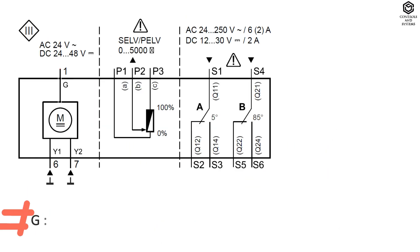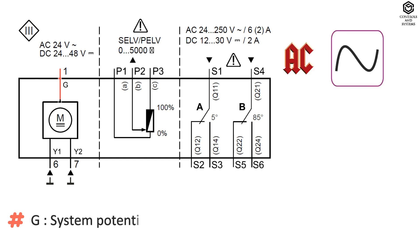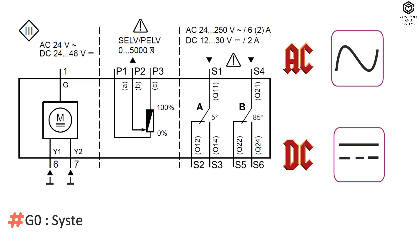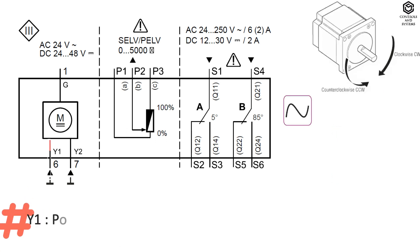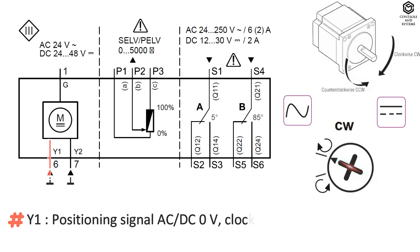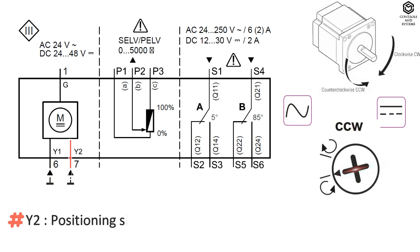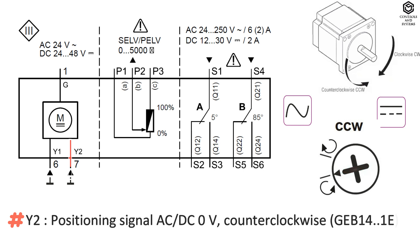Connection terminals: terminal G is operating voltage AC 24 volt or DC 24 to 48 volt supply, wire color red. Terminal G0 is neutral, wire color black. Terminal Y1 is positioning signal AC or DC 0 volt clockwise, wire color violet. Terminal Y2 is positioning signal AC or DC 0 volt counterclockwise, wire color orange.